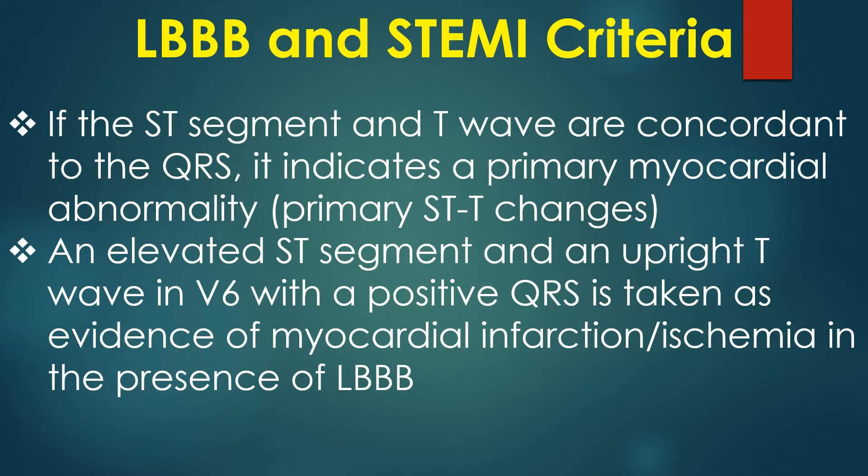If the ST segment and T wave are concordant to the QRS, it indicates a primary myocardial abnormality. An elevated ST segment and an upright T wave in V6 with a positive QRS is taken as evidence of myocardial infarction or ischemia in the presence of LBBB.